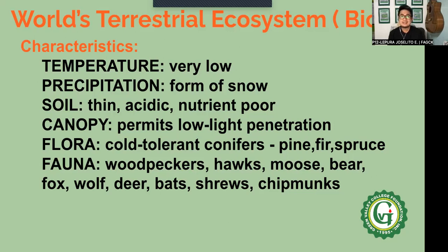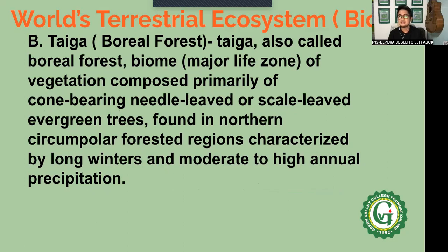Canopy permits low light penetration. The flora includes cold-tolerant conifers — pine, fir, and spruce. For your fauna or animals, there are woodpeckers, hawks, moose, deer, fox, wolf, bats, shrews, and chipmunks. Remember the difference between tundra and taiga: your taiga is composed primarily of cone-bearing, needle-leaf or scale-leaf evergreen trees, while your tundra is the coldest and driest of all biomes.